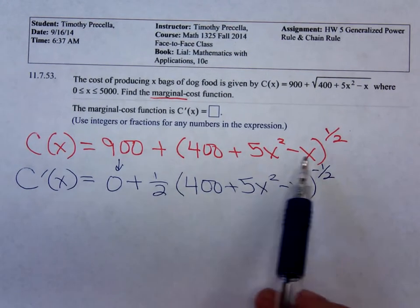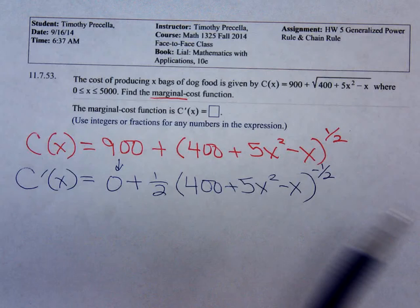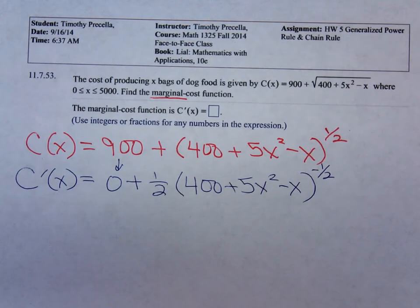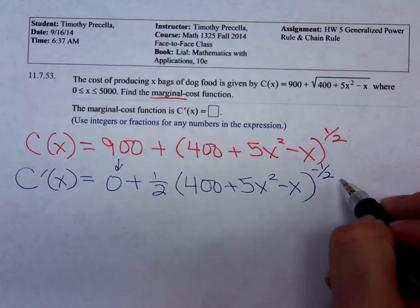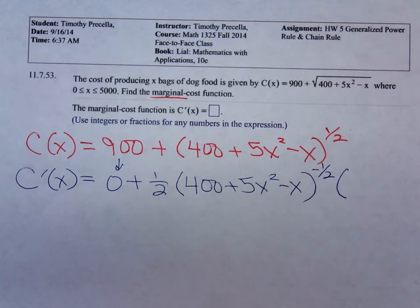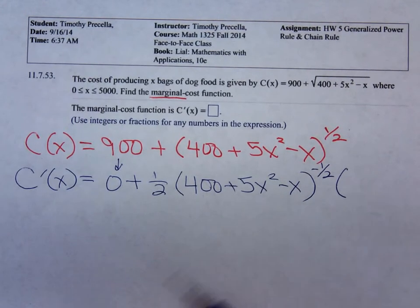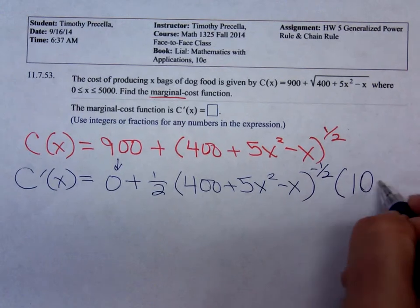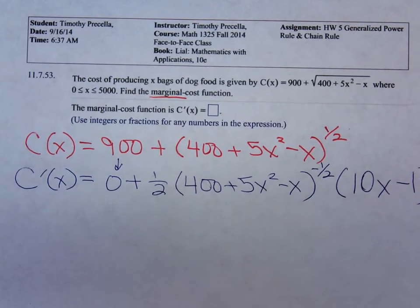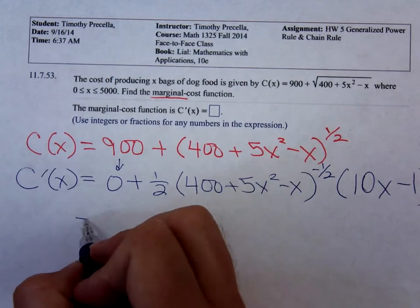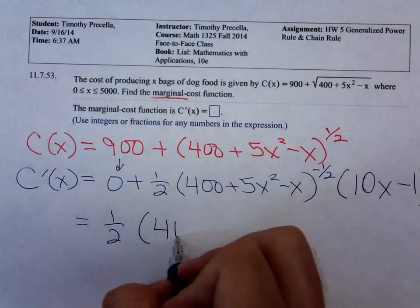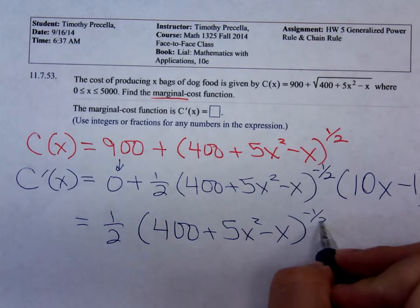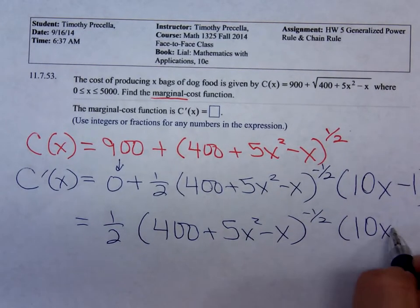And we still have to multiply by? The derivative of the function inside the parentheses. Okay, well said. We have to multiply by the derivative of the function inside the parentheses. So differentiating the stuff inside the parentheses, the derivative of 400? Zero. Okay, that's nice. The derivative of 5x squared? 10x, and minus one. So we have one-half times (400 + 5x² - x) to the negative one-half times (10x - 1).